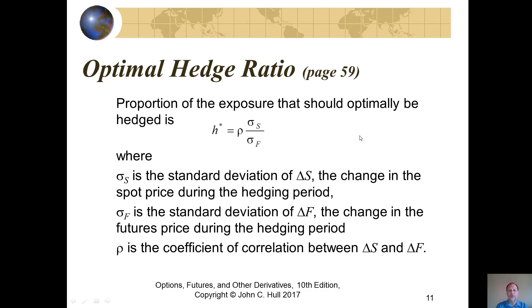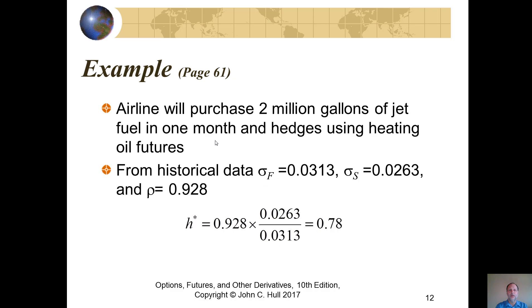To create the optimal cross hedge, the proportion of the exposure that should optimally be hedged is H*, where rho is the coefficient of correlation between the change in S and the change in F, delta S is the standard deviation of the change in the spot price during the hedging period, and delta F is the standard deviation of the change in the futures price during the hedging period. This gives the optimal number of contracts to hedge.